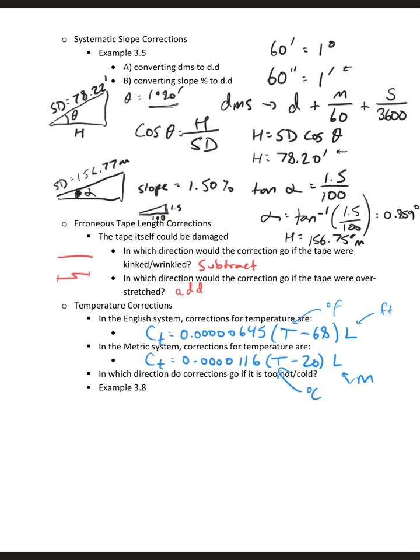That's going to be similar to the one above. I'm going to add the correction because the tape is stretched because it's hot. If it's cold and it's less than 68 degrees, the tape is going to shrink and the value that I read off is going to be too high. So you'll see that this formula will give you a negative number and I'll be subtracting that correction. So if it's too hot, we're adding, and if it's too cold, we're subtracting.